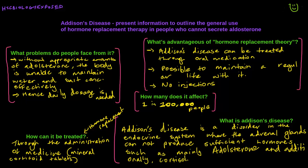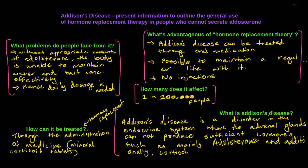So let's firstly look at what Addison's disease actually is. Addison's disease is a disorder in the endocrine system where the adrenal glands cannot produce sufficient hormones — mainly Aldosterone, and additionally Cortisol. Cortisol we haven't really looked into and for this topic it's not that important, it's just an extra fact you might want to know. What we're really looking at is Aldosterone, why it's so important to replace, and how we replace it through hormone replacement therapy.